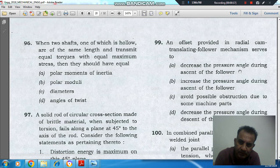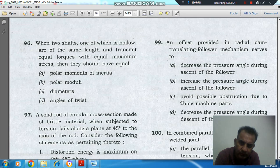Option A: decrease the pressure angle during ascent of the follower. Option B: increase the pressure angle during ascent of the follower. Option C: avoid possible obstruction due to some machine parts.